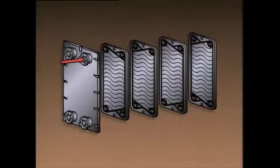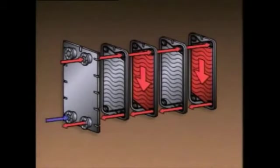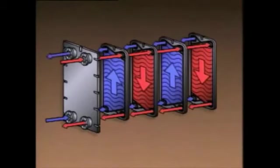During operation, the hot fluid enters this inlet, flows through the portholes, and passes downward between the plates. The fluid then flows into the portholes at the bottom of the plates, where it's directed to the hot fluid outlet. The cold fluid enters the heat exchanger on the bottom, and passes through another set of portholes at the bottom of the plates. The cold fluid then flows upward on the opposite sides of the plates, and exits the portholes at the top of the plates. From there, it's directed to the cold fluid outlet.